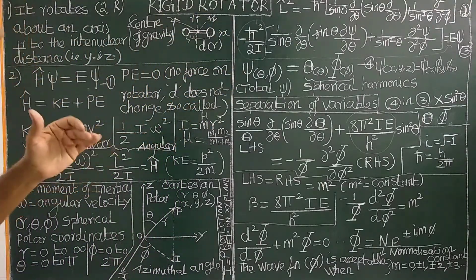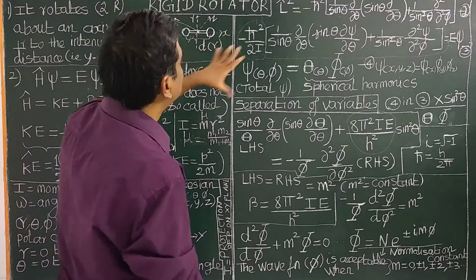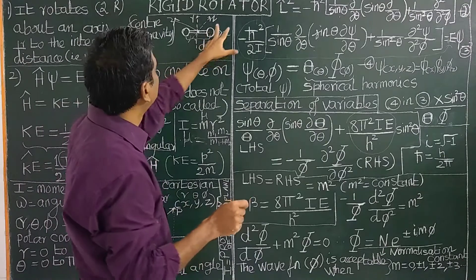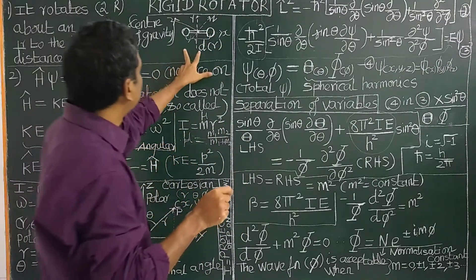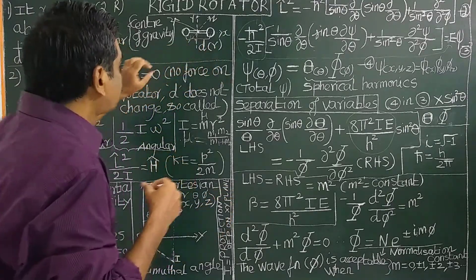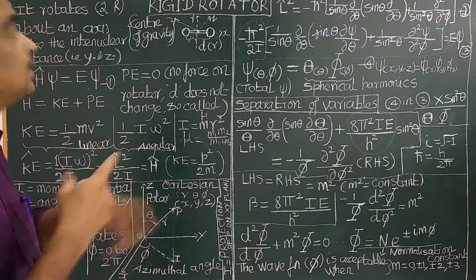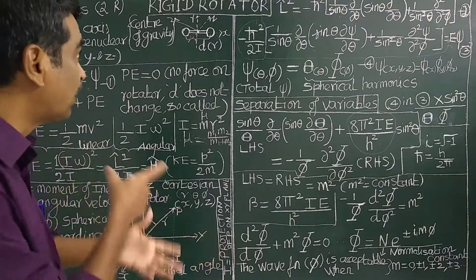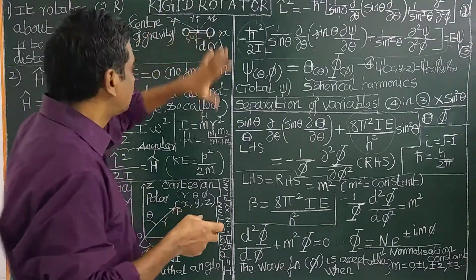Let us apply the prospects of quantum mechanics to solve the Rigid Rotator. What is a Rigid Rotator? Let us consider a linear diatomic molecule with the internuclear distance D or R. For a linear diatomic molecule, there are two rotational degrees of freedom, as we have already studied in one of the previous videos.